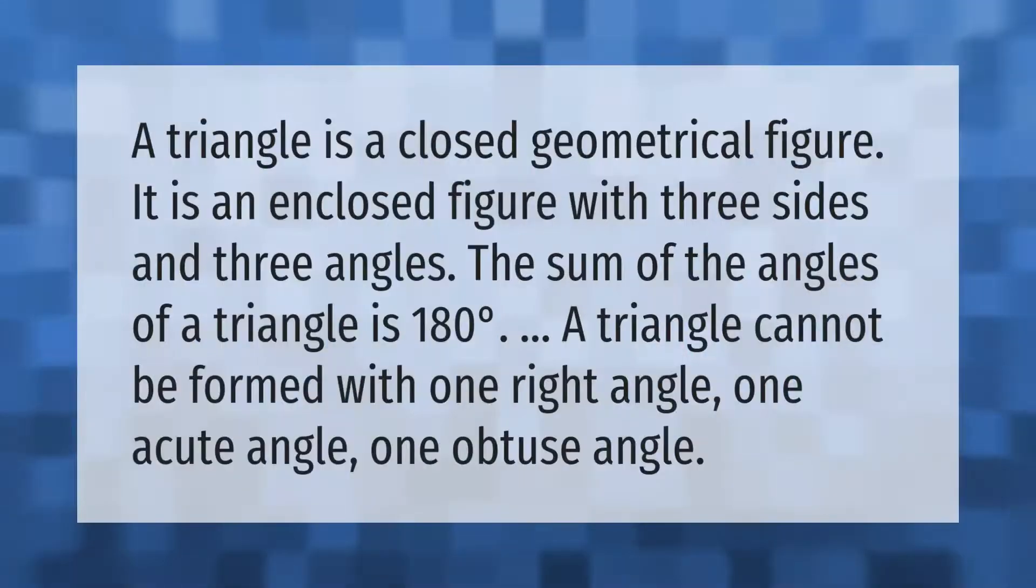A triangle is a closed geometrical figure. It is an enclosed figure with three sides and three angles. The sum of the angles of a triangle is 180 degrees. A triangle cannot be formed with one right angle, one acute angle, and one obtuse angle.